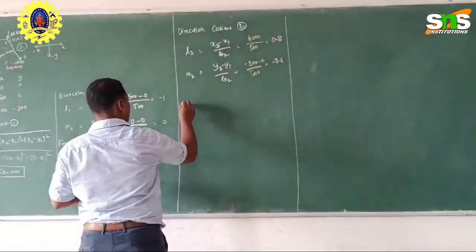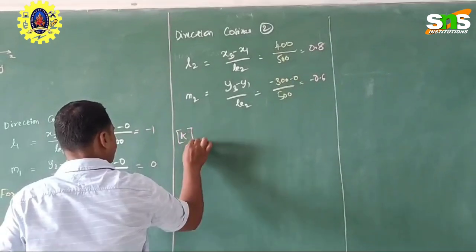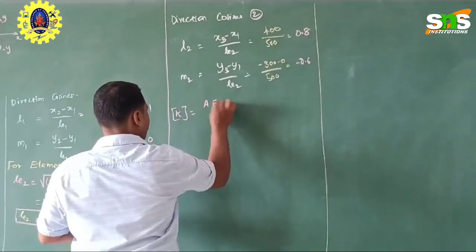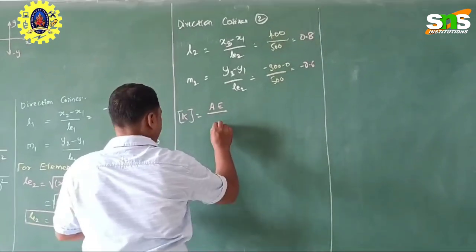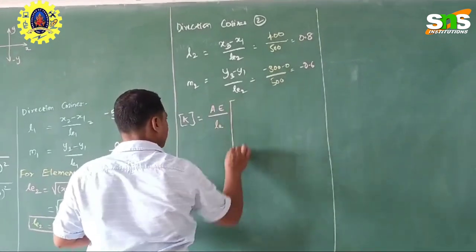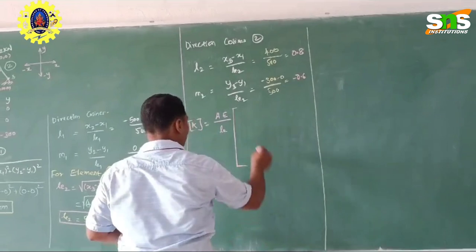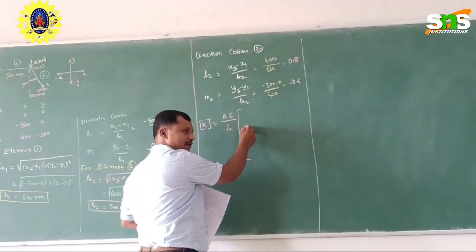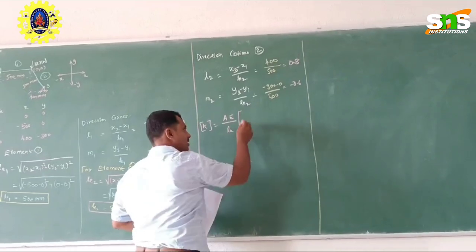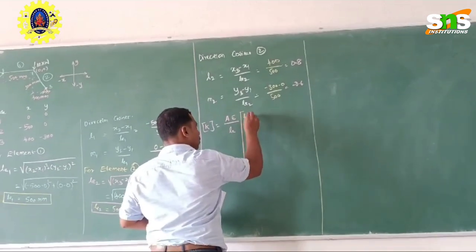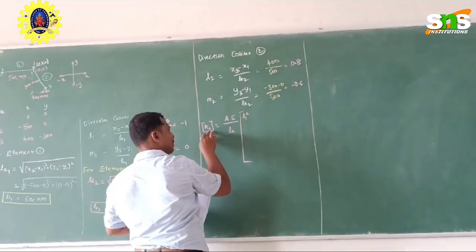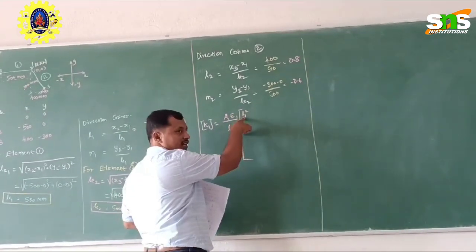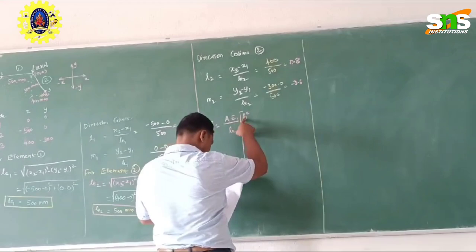The truss element formula to find the stiffness matrix is: area of the element multiplied by the Young's modulus of the element, divided by the length of the element. These 4 values stay constant. Initially we have to write l1 squared — so it is element number 1, I am writing a1, e1, and l1 — so here it is l1 squared.